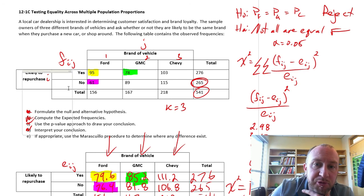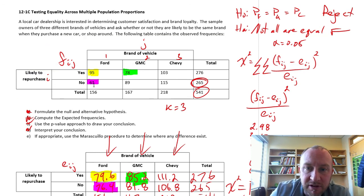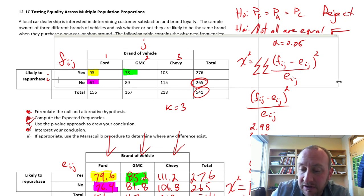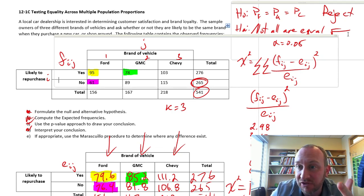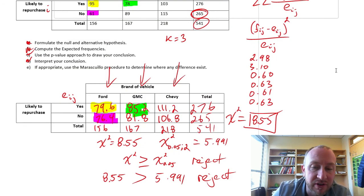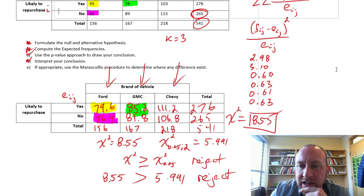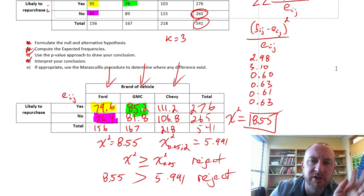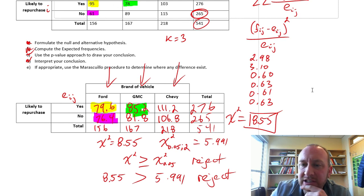So the next part. If appropriate, use the Marascuilo procedure to determine where the difference lies. So we've identified that a difference exists. Now we need to identify where is that difference. For this, I'm going to actually start another video, just so I can keep it nice and quick. We'll do part E in a separate video because there's a few more calculations that we need to do there. So that's a nice quick version of this test on multiple population proportions. Thanks for watching. I hope it was not too quick. I hope it was helpful. Bye-bye.